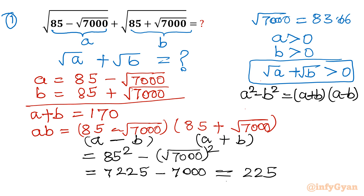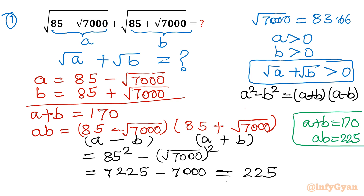So to summarize what we have concluded so far: a plus b equals 170, a times b equals 225, and our target is to find square root a plus square root b. This value will always be positive since a and b are positive; otherwise a complex solution would result.